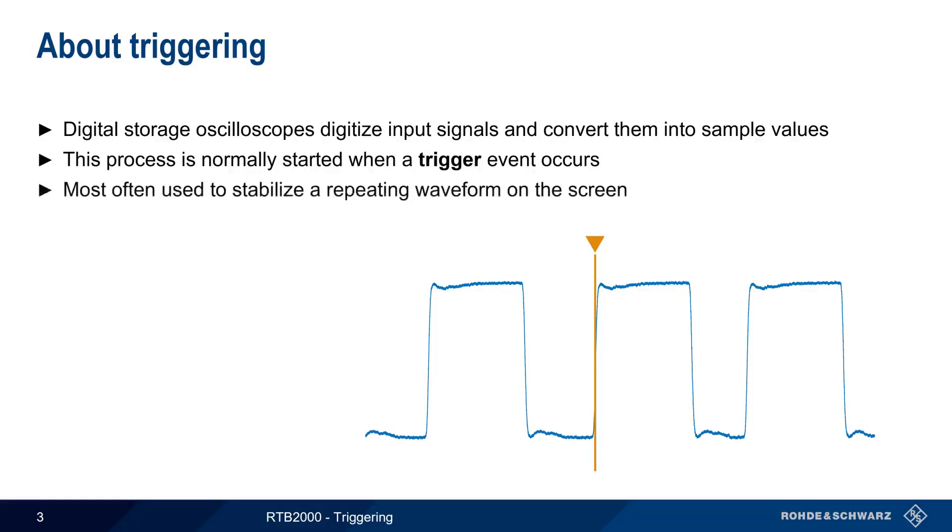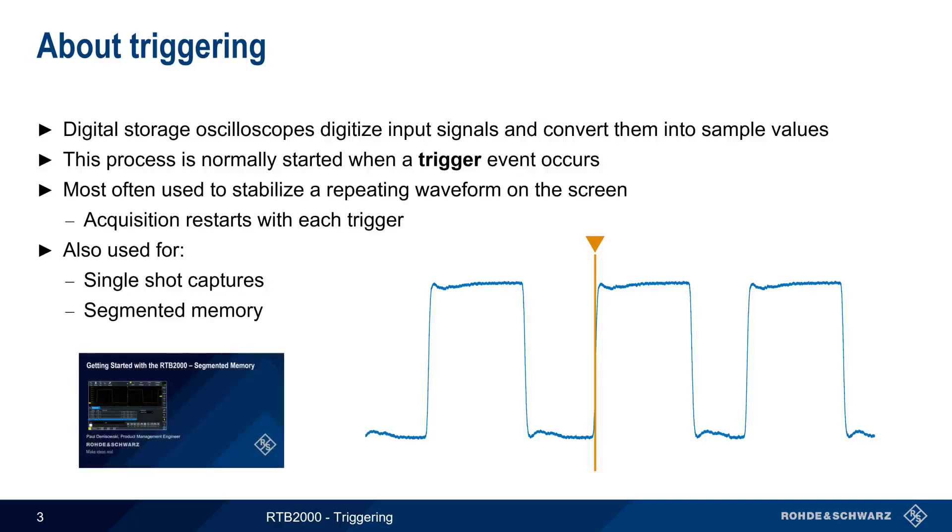The most common application for triggering is stabilizing a repeating waveform on the screen by starting a new acquisition with each trigger event. Triggering can also be used when making a one-time or single-shot capture, and is also important in segmented memory applications. Please see the separate presentation on segmented memory if you'd like to learn more about how to use segmented memory on the RTB.